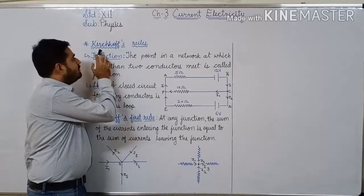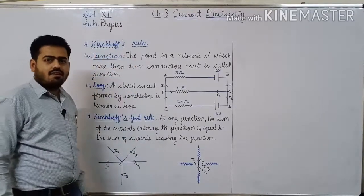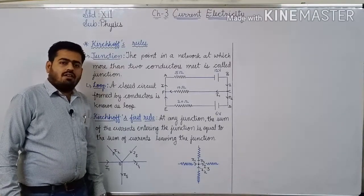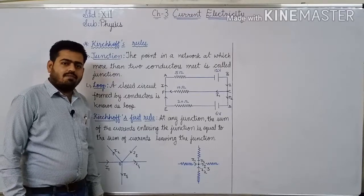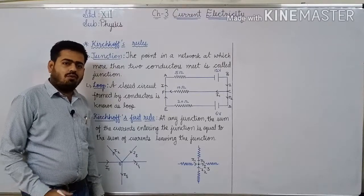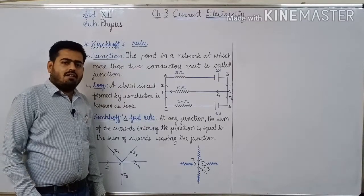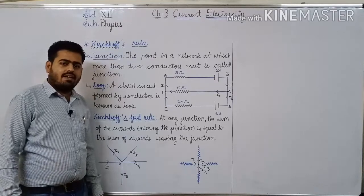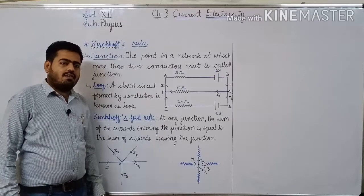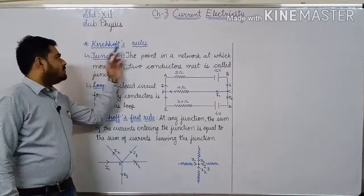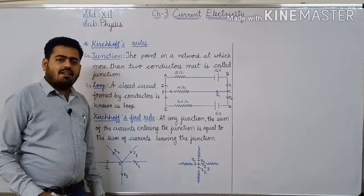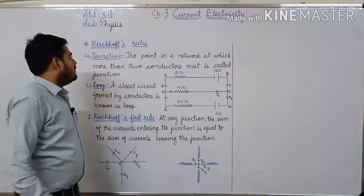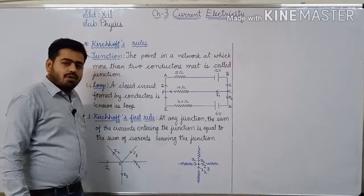Now we will study about Kirchhoff's rules. This topic is very important because complicated circuits cannot be solved using Ohm's law. When too many resistors and cells are connected, the circuit will become very complicated. Using Kirchhoff's rules, we can easily find electric current flowing through resistors and potential difference across them.